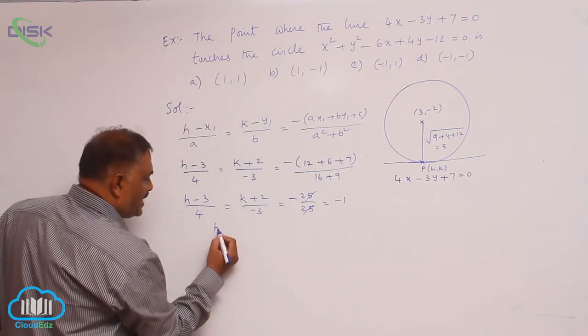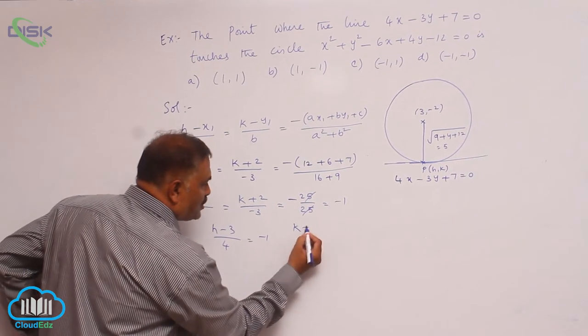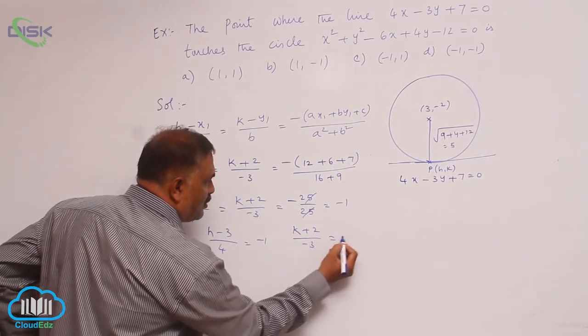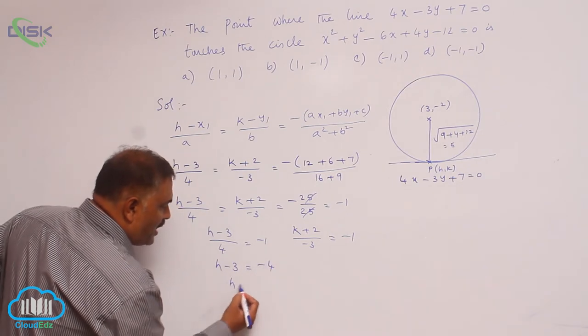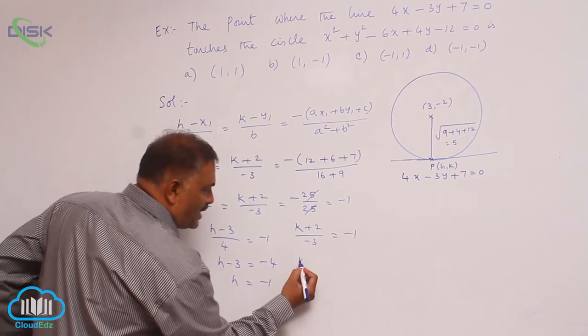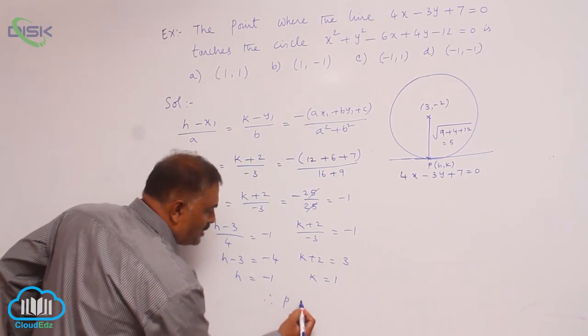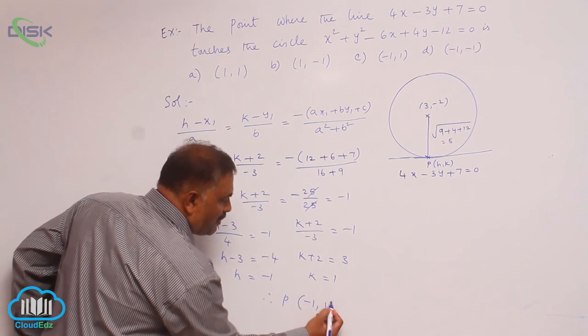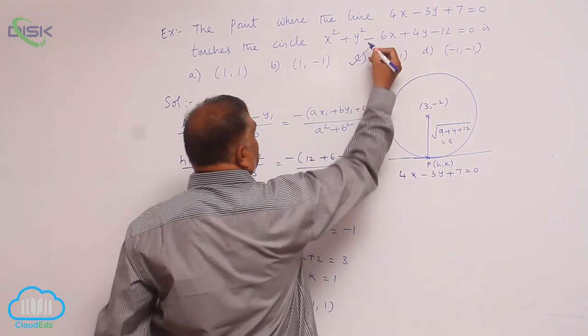So equate h minus 3 by 4 is equal to minus 1, k plus 2 divided by minus 3 equal to minus 1. h minus 3 equal to minus 4, h is equal to minus 1. k plus 2 is equal to 3, k is equal to 1. Therefore the required point is minus 1 comma 1. So the option c is correct.